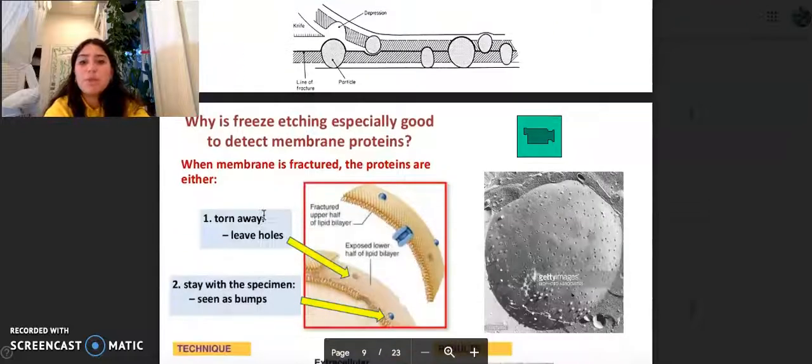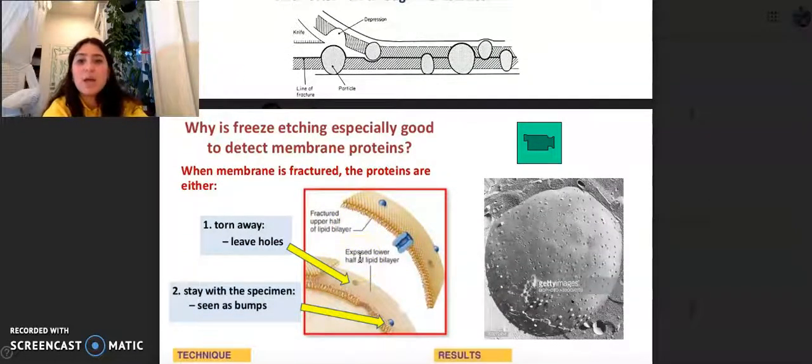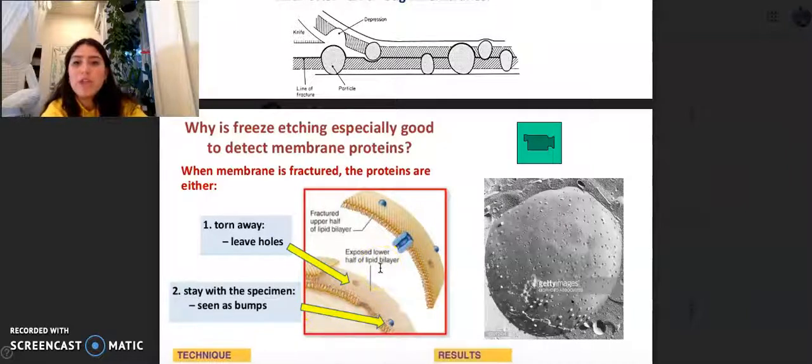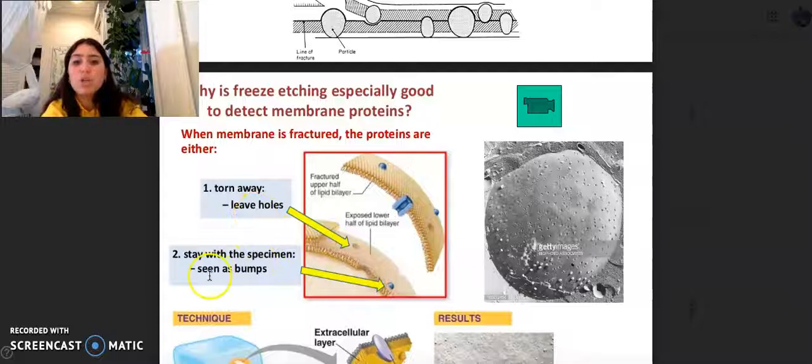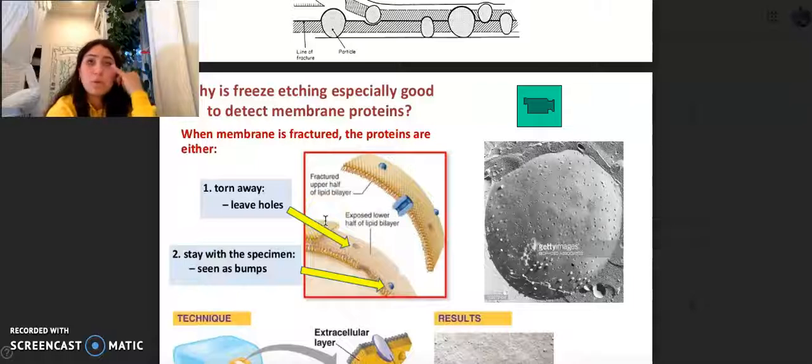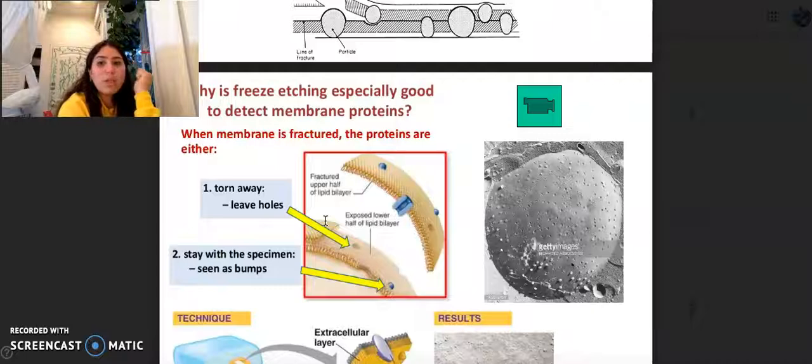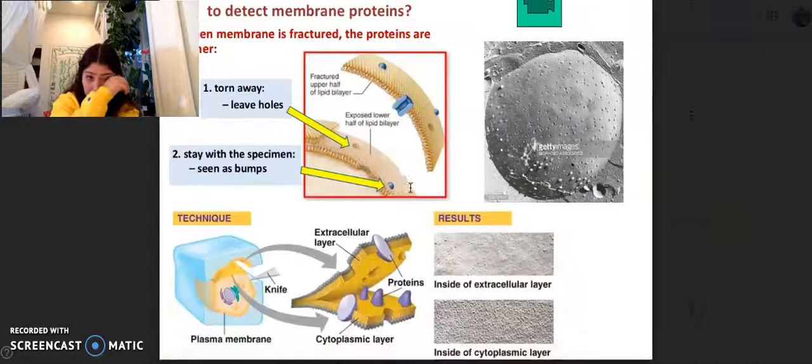Why is freeze etching especially good to detect membrane proteins? When membrane is fractured, the proteins are either torn away and leave holes, or stay with the specimen seen as bumps. It's kind of like when you do those pore strips and you get all the stuff out, it's either going to leave holes or it's going to be seen with little bumps. It would be like all your pores coming out on those little things.